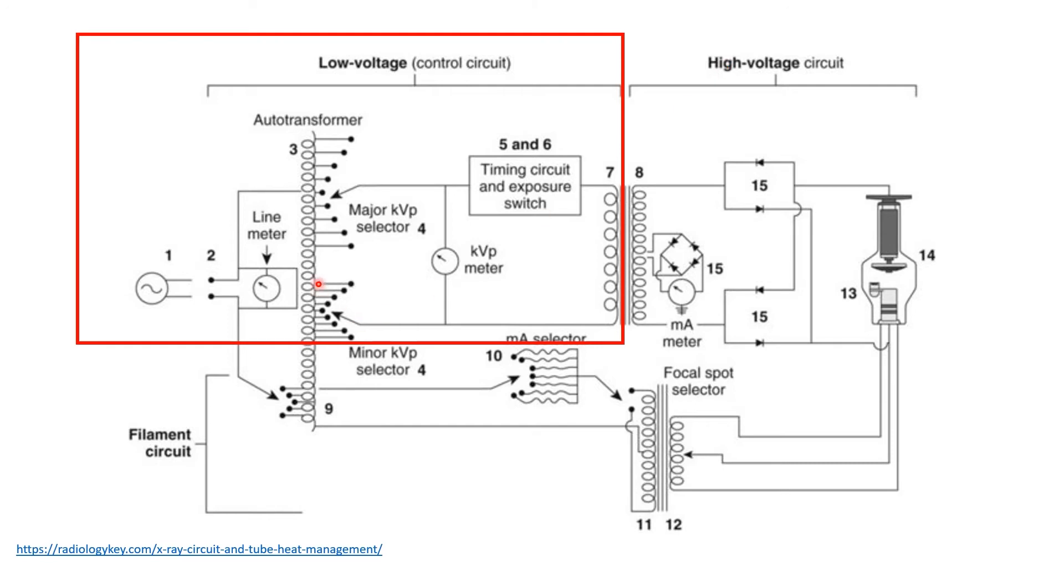The next component is the auto transformer, which varies the voltage to the primary side of the step-up transformer. And this is done by the KVP selector present here in number 4, at the secondary winding side of the auto transformer. Then, it will reach the exposure switch that closes the circuit and lets the current flow through the primary side of the step-up transformer.